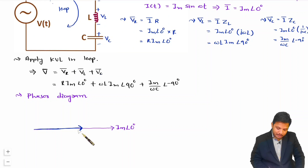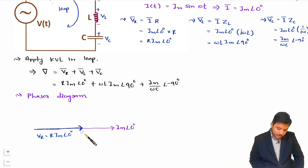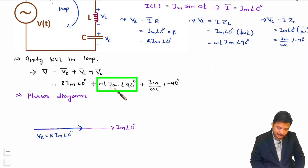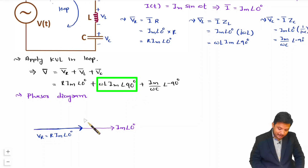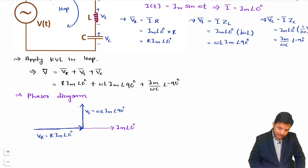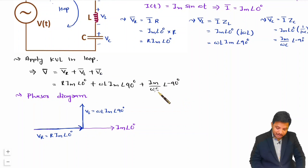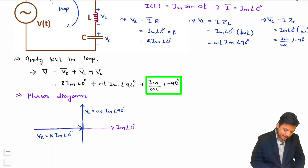Starting with VR — it has angle 0°, so it overlaps with the current phasor. Its magnitude is VR = R·Im at angle 0°. VL has magnitude ωL·Im and angle 90°, so it is drawn vertically upward. VC has angle −90° and magnitude Im/ωC, so it is drawn vertically downward at −90°.